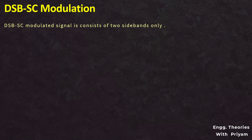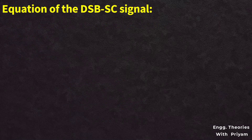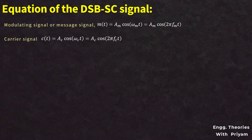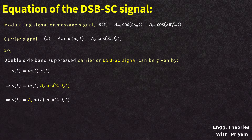The DSBSC modulated signal contains an upper sideband and a lower sideband, and the carrier signal is suppressed. For the mathematical analysis: the message signal m(t) = AM·cos(2πFMt), the carrier signal c(t) = AC·cos(2πFCt), and the DSBSC signal s(t) = m(t)·c(t) = AC·m(t)·cos(2πFCt). This is the standard equation for the DSBSC modulated signal — equation 1.